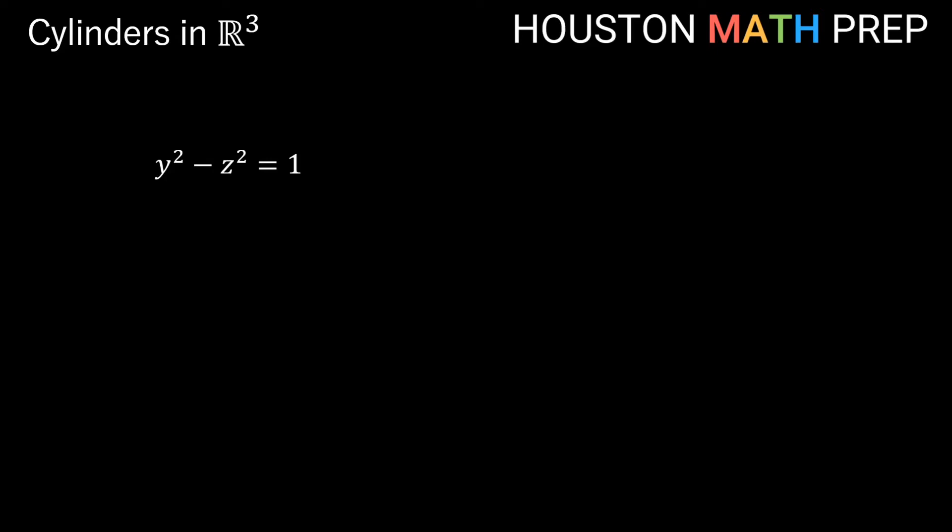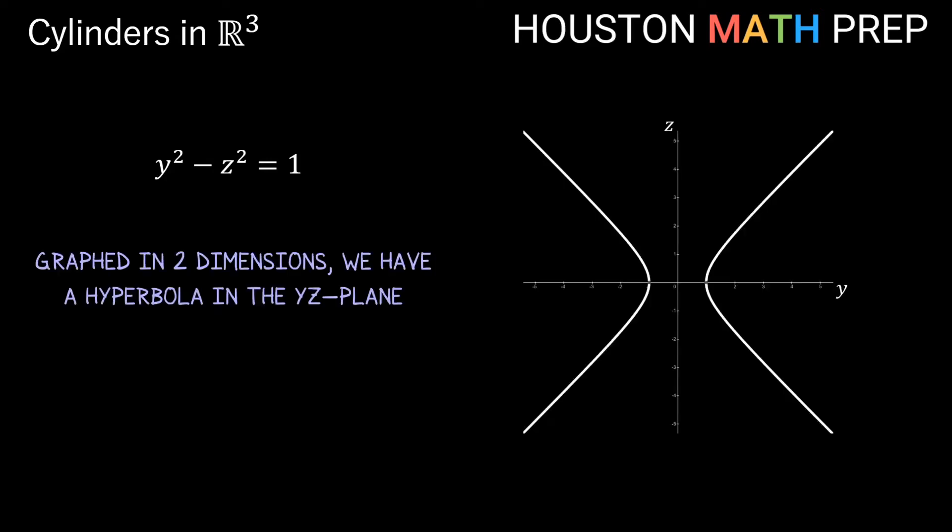We'll look at one more example. Here we've got the equation y² - z² = 1. We might remember that this equation actually represents a hyperbola in the plane, and in this case it would need to be a 2D plane with y and z axes.